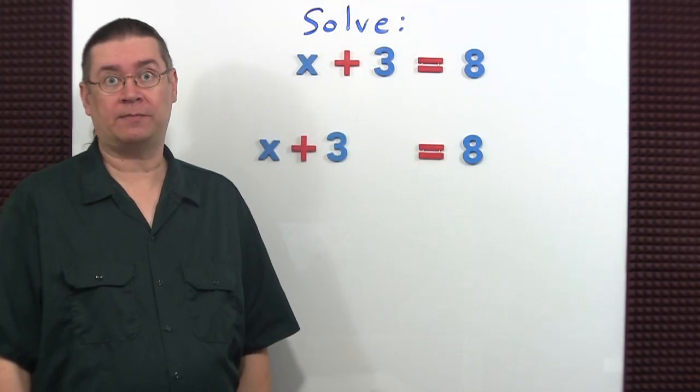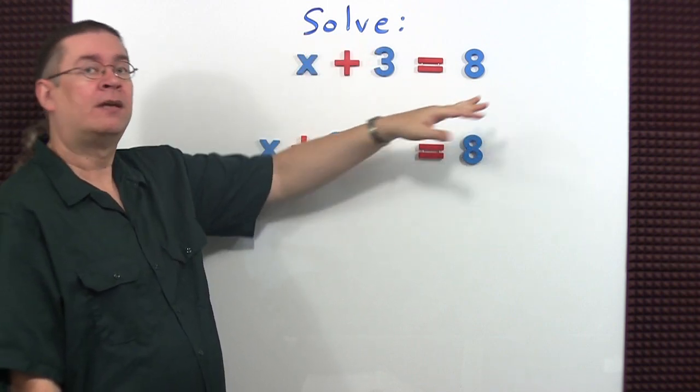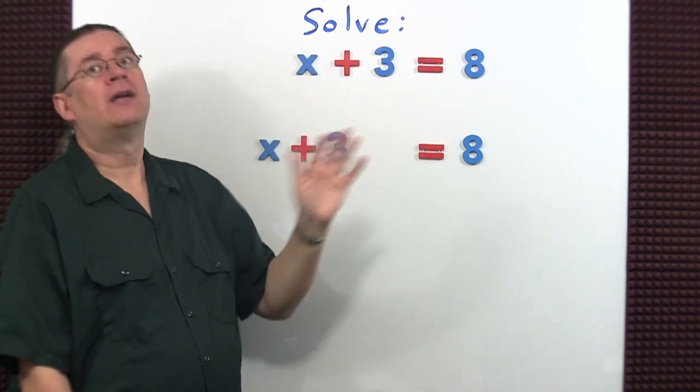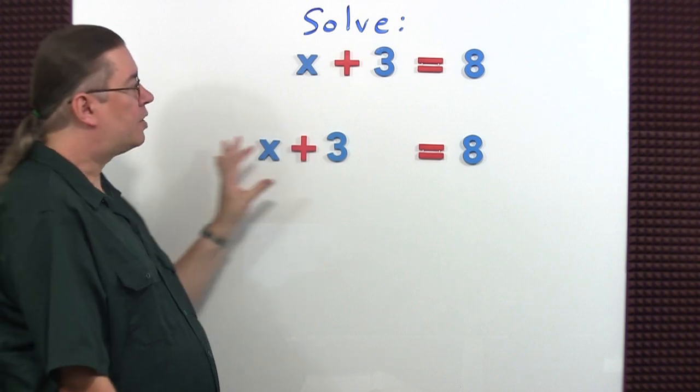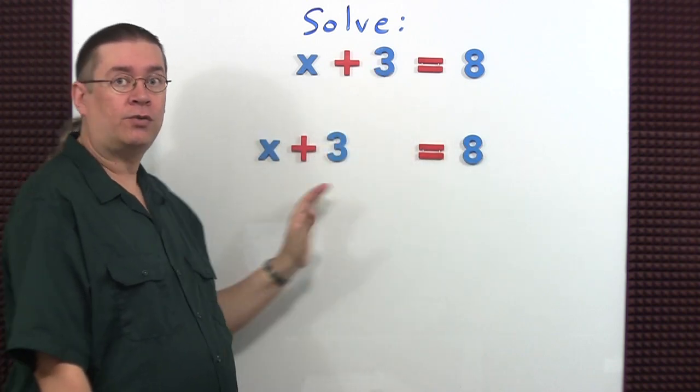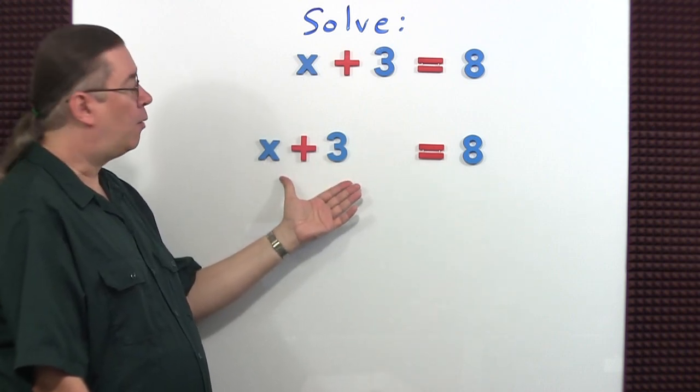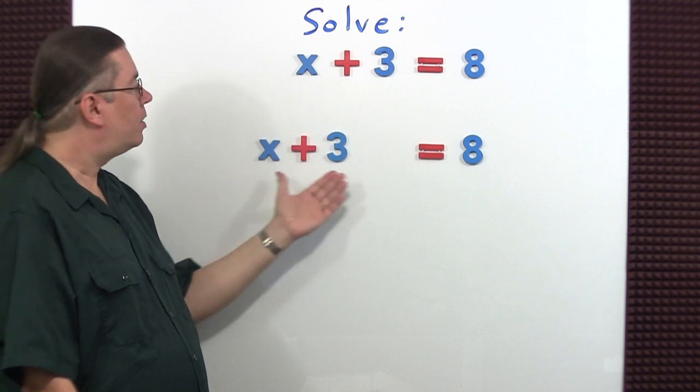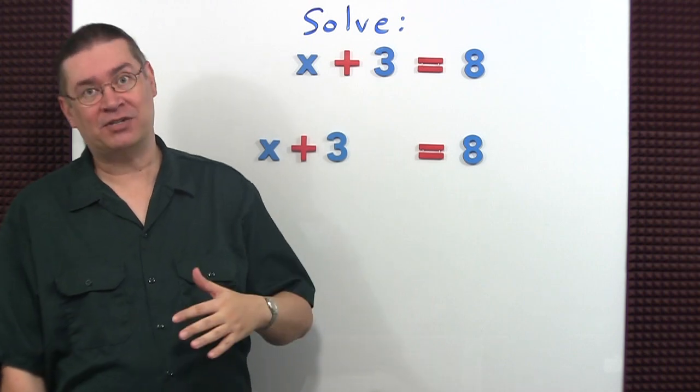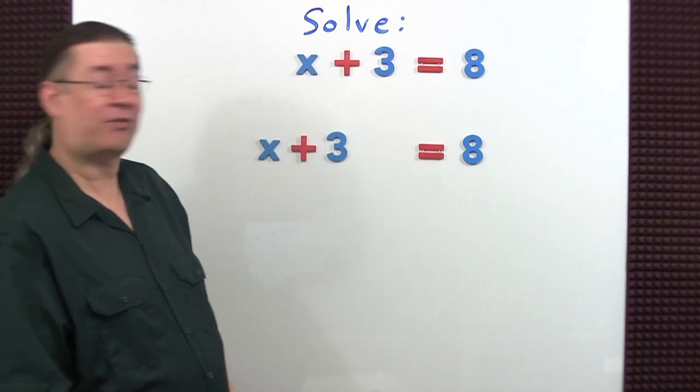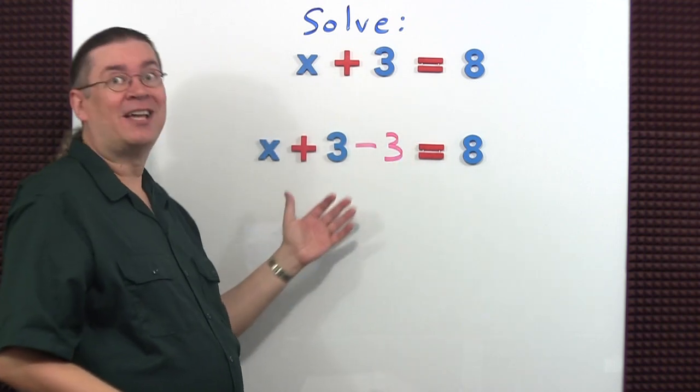Let's take a look at an actual algebraic equation. I would like to solve x plus 3 equals 8. Obviously you can almost just look at it and figure out the answer, but let's do this algebraically. There are a couple of ways: horizontal format and vertical. Let's do the horizontal method first. x plus 3, I would like to isolate the variable x. If 3 is being added to it, to remove the 3 we perform the opposite operation. The opposite of addition is subtraction, so let's subtract 3. But what you do to one side of the equation you must do to the other side of the equation.